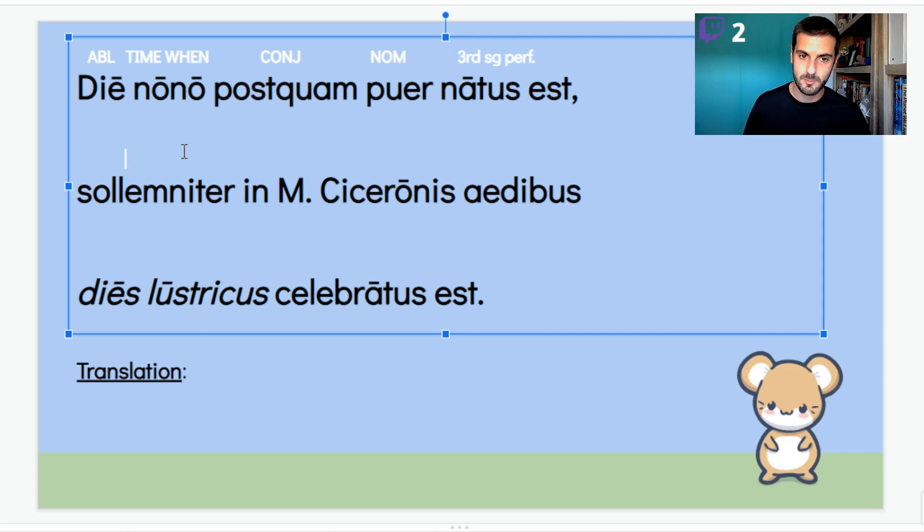Solemniter, that's an adverb. Anytime you have the iter on the end, like celeriter or faciliter, difficiliter, audacter, those are your adverbs. In Marci Ciceronis aedibus. So this is in, right? In takes the ablative, but M. Ciceronis is in the genitive case. And I think I mentioned this to you guys in one of the other stories. Genitives are, as I call them, snugglers. They like to be inside of, for instance, a prep phrase. So in aedibus, in the house, Marci Ciceronis, in the house of Marcus Tullius Cicero.